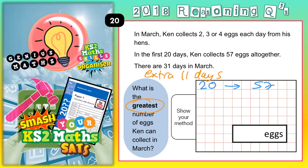The least number of eggs he could get each day is 2, so the least would be 11 lots of 2. But if he's getting the greatest number of eggs each day for those 11 days, it's going to be 11 lots of 4. Each of those days he gets 4, so 11 times 4 equals 44.